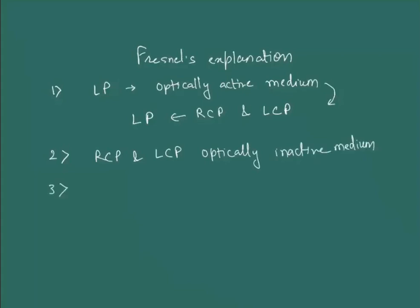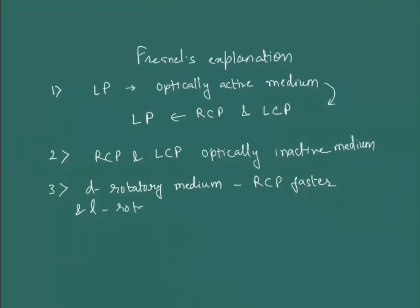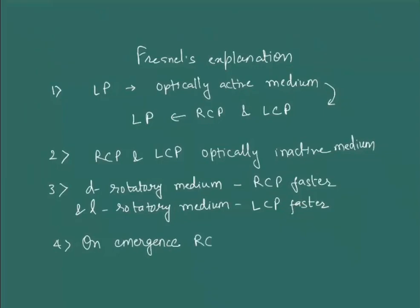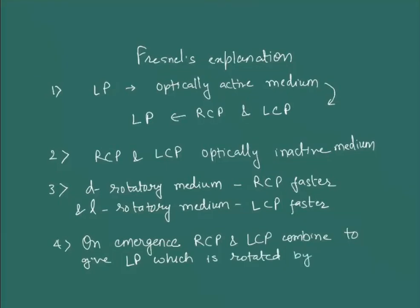When inside an optically active medium: in a D-rotatory (dextro-rotatory) medium, clockwise moves faster — RCP is faster; in an L-rotatory medium, LCP moves faster. On emergence, RCP and LCP combine to give linearly polarized light which is rotated by some angle relative to the incident beam. If the material is dextro-rotatory the rotation happens clockwise; if levo-rotatory, it goes left-hand side.